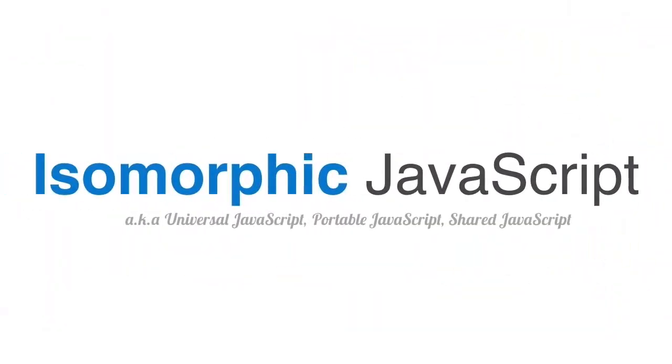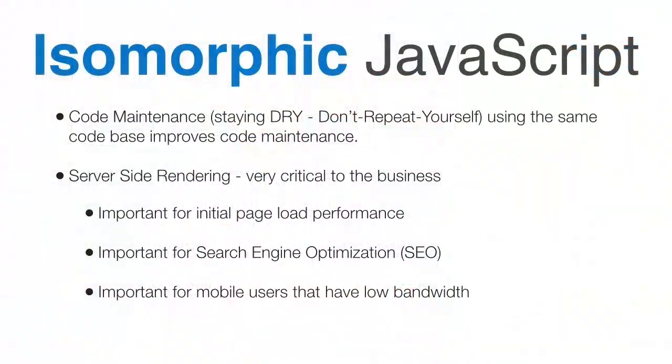This is referred to as isomorphic JavaScript — sometimes called universal, portable, or shared JavaScript. The idea is that my web application takes on the same form regardless of whether it's running in the browser or the server. Isomorphic JavaScript essentially means sharing JavaScript code between the server and a web browser, mobile phone, or Internet of Things device.